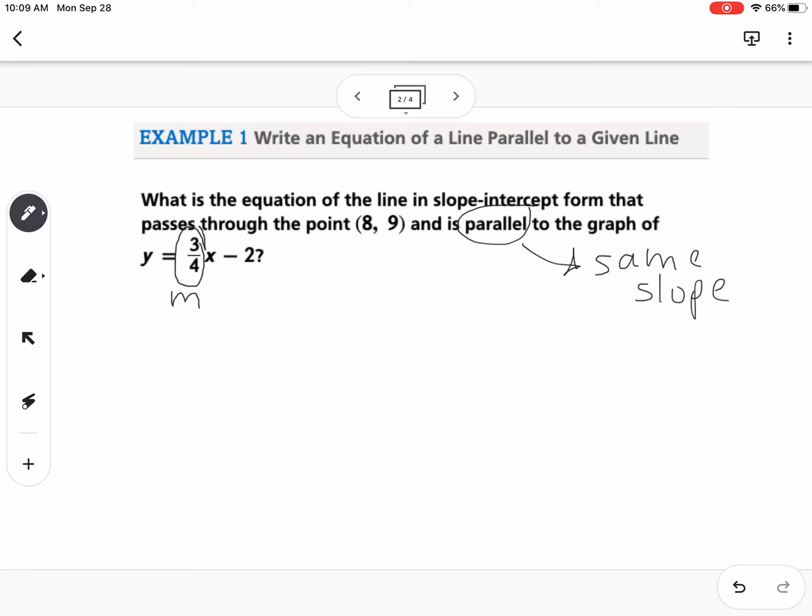So we have a slope right here, and they give us a point, which we know can be our x1, y1. So if we have a point and we have a slope, we can write the equation of the line in point-slope form. So remember, point-slope is y minus 9 equals 3/4 times x minus 8.